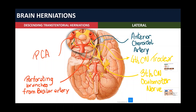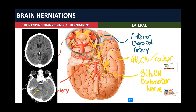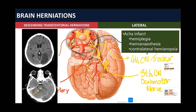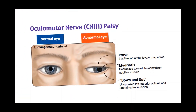Compression of the PCA will lead to an ischemic stroke in the PCA territory. Compression of the perforating branches will lead to a Duret hemorrhage, which we will discuss later. Compression of the anterior choroidal artery will lead to an infarct, and the patient will present with hemiplegia, hemianesthesia, and contralateral hemianopsia. Compression of the nerves will lead to fourth cranial nerve palsy and third cranial nerve palsy. The first symptom in these patients will be mydriasis.